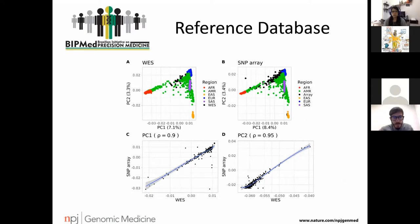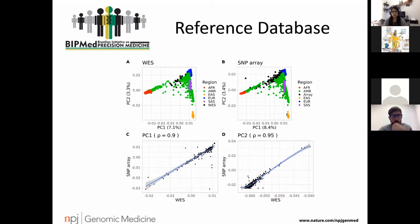Looking at the PCA from the 1,000 Genome Project, Brazilian subjects shown in black dots form a gradient between European and African subjects. This means that to treat a Brazilian subject, for some we must behave as if they come from Europe, and for others from Africa. This will be very relevant for genomic medicine very soon. Thank you very much for your attention.